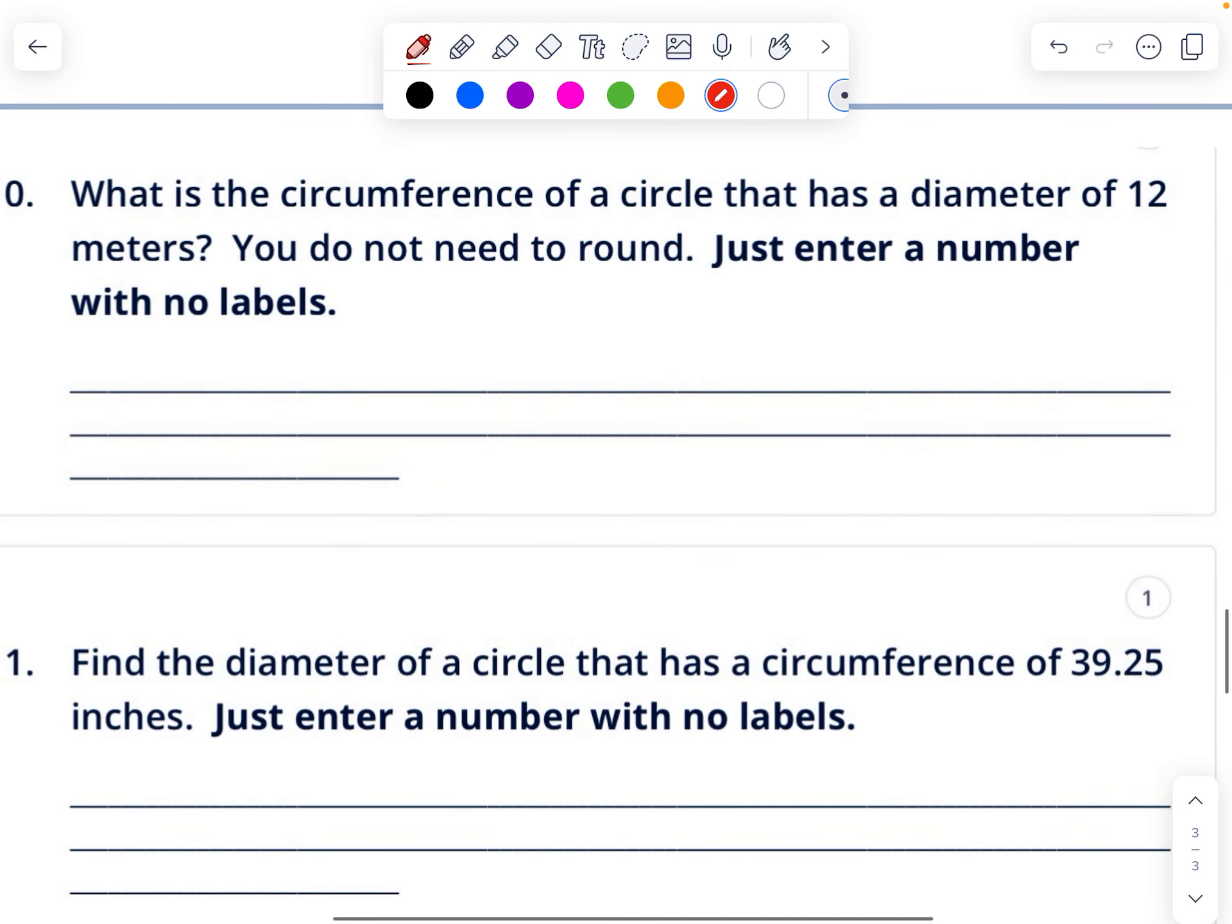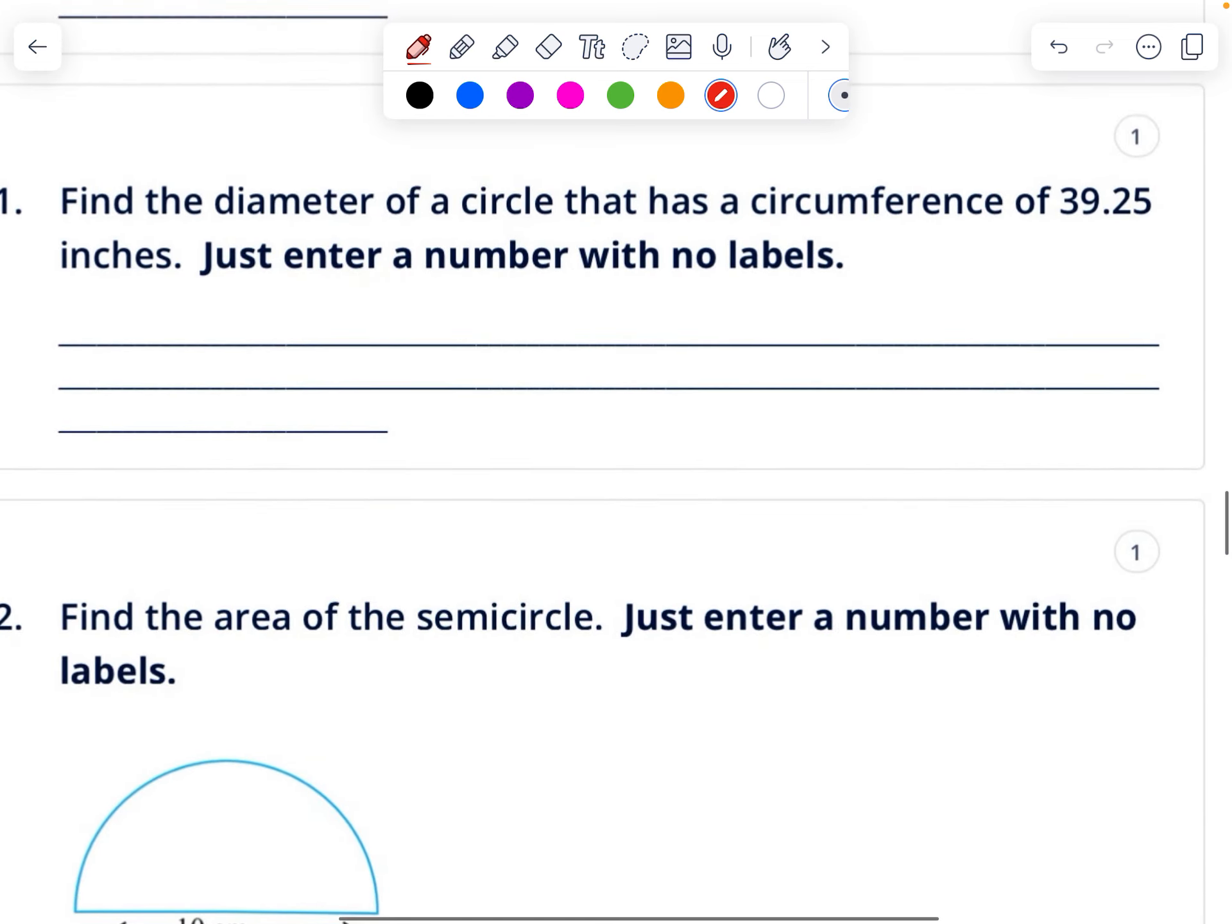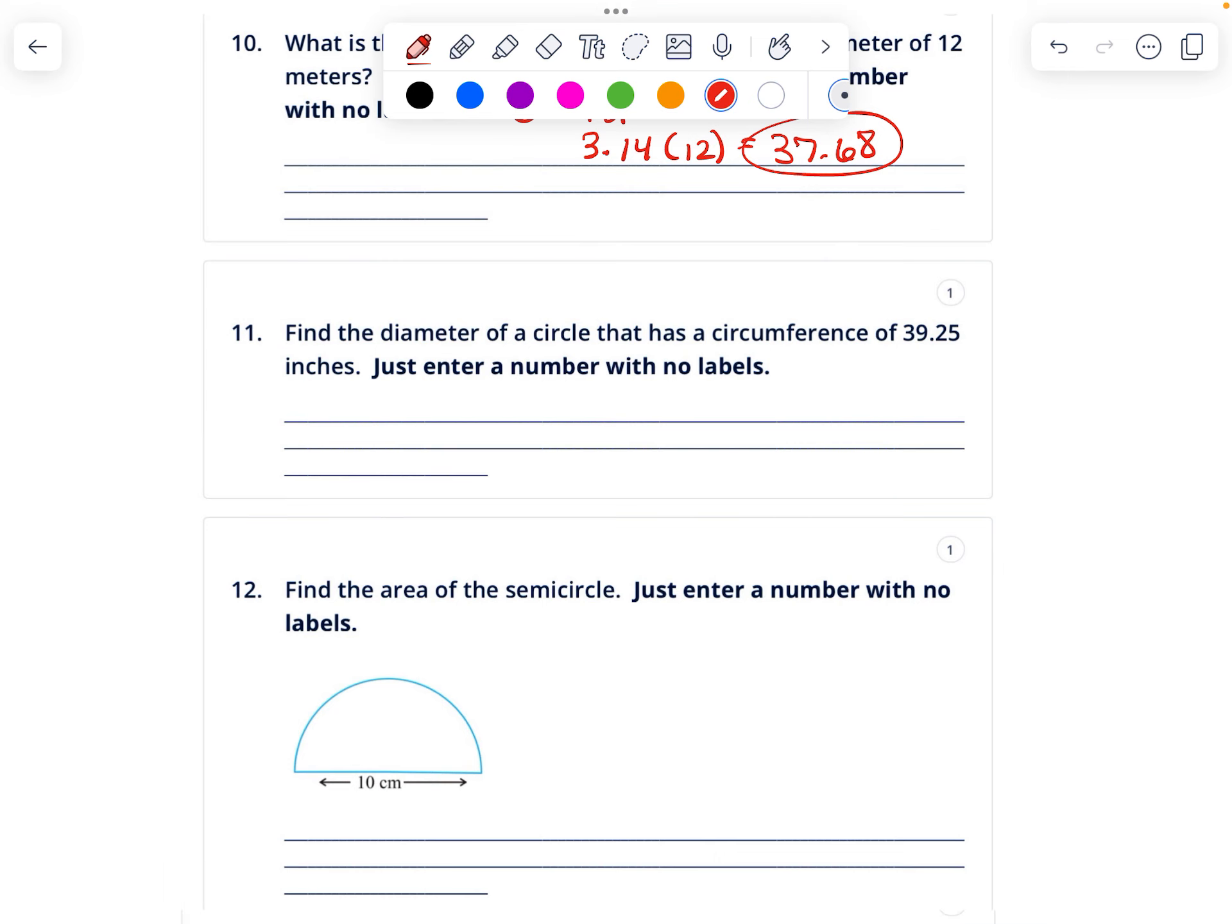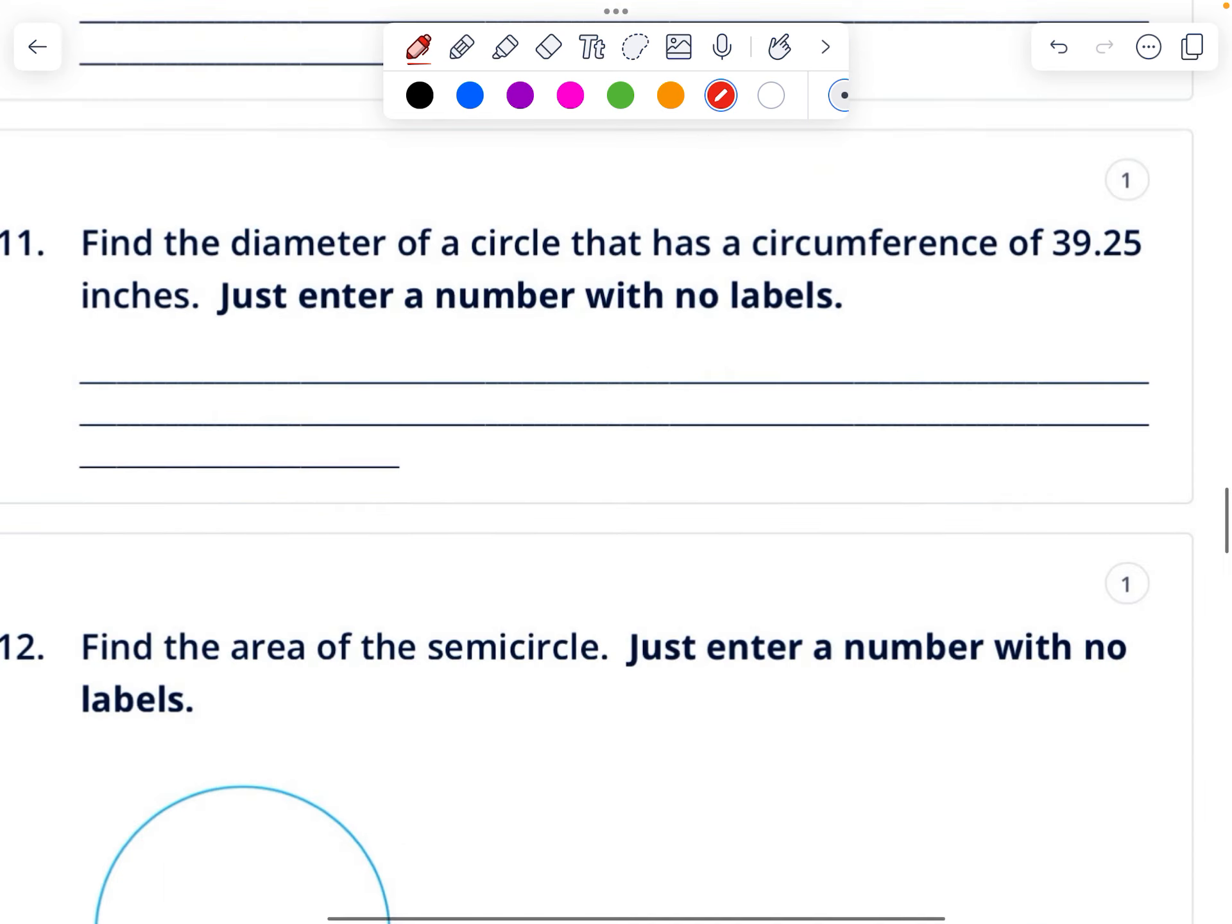Find the diameter of a circle that has a circumference of 39.25. So we know the formula for the circumference of a circle is pi times diameter. They give us a circumference, and of course we know pi, but we don't know the diameter. So in order to solve that one-step equation, we would divide both sides by 3.14 because that's the opposite of multiplying by 3.14. So in my calculator I'll do 39.25 divided by 3.14, and I get 12.5. And this is the diameter, which is what they're asking for.